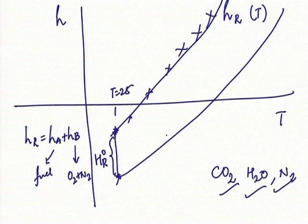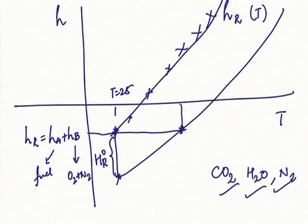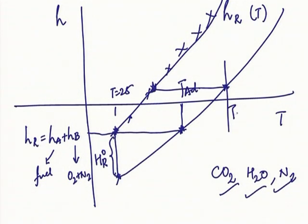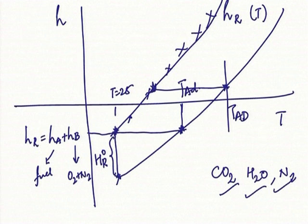Since it is an adiabatic process — no Q, no W — H must be the same for reactants and products. Draw a horizontal constant-H line; where it cuts the products' curve gives the temperature, and that temperature is the adiabatic flame temperature T_ad. Depending on the initial state of the reactants — for example, if you use preheated air — you will get a different T_ad. If you add more nitrogen (excess air), nitrogen does not release energy but absorbs it, so the adiabatic flame temperature drops down; it may drop to 1800 or 1600 K.